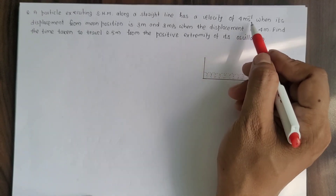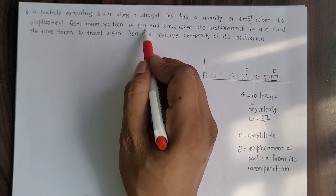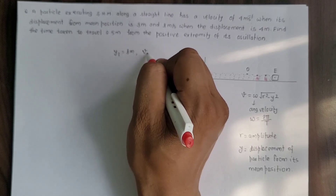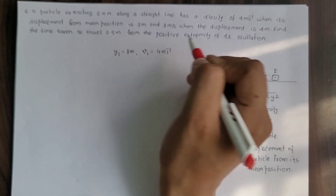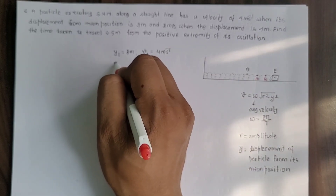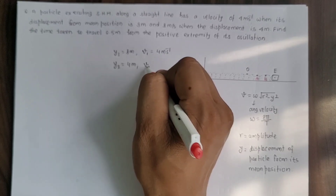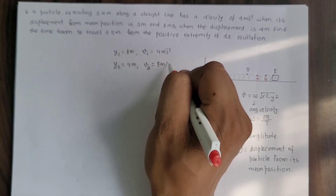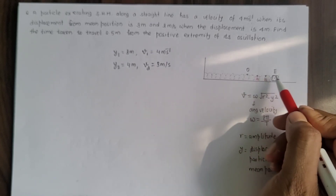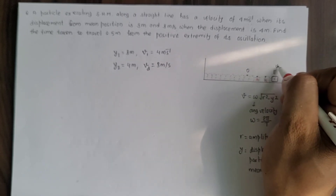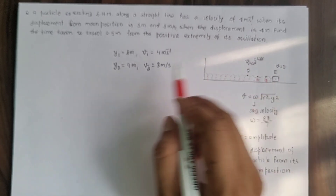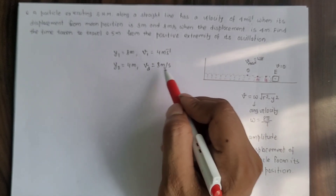From the question, the particle's velocity is 4 meter per second when the displacement is 3 meter. So at position 1, displacement y₁ = 3 meter and velocity v₁ = 4 meter per second. The velocity of the particle becomes 3 meter per second when the displacement is 4 meter. So in case 2, displacement y₂ = 4 meter and velocity v₂ = 3 meter per second. In SHM, as the particle moves from mean position towards the extreme position, the velocity decreases, reaching zero at the extreme position and maximum (ωr) at the mean position.